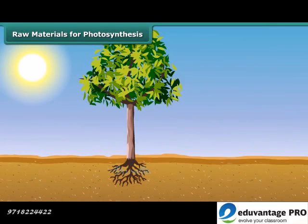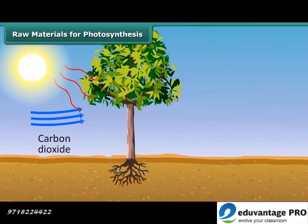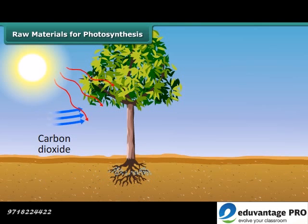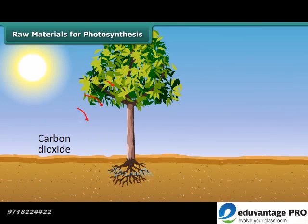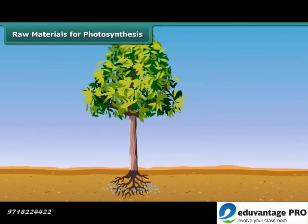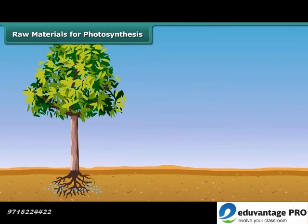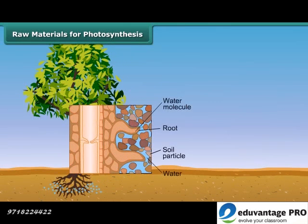In plants, water, minerals, and carbon dioxide are raw materials for the synthesis of food. Water and dissolved minerals are absorbed directly from the soil through roots and sent to the leaves by means of many small vessels present in the stem.